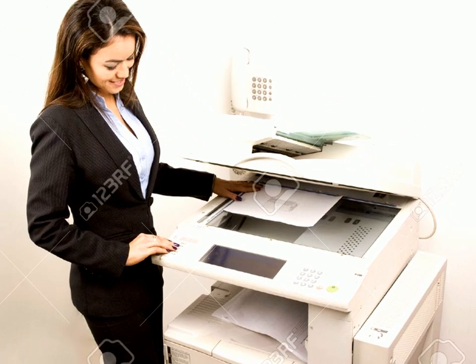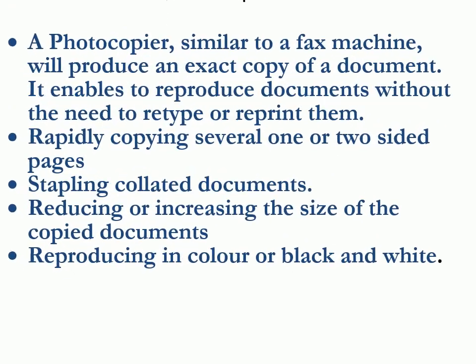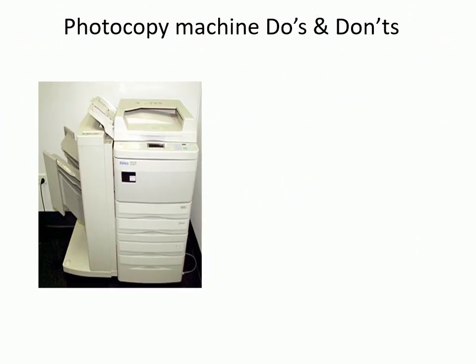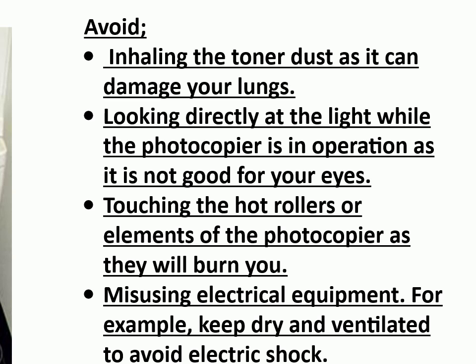Photocopy machine — a photocopier, similar to a fax machine, produces an exact copy of a document, enabling reproduction without the need to retype or reprint. Capabilities include: rapidly copying single or double-sided pages, stapling collated documents, reducing or increasing the size of copied documents, and reproducing in color or black and white. Photocopy machine do's and don'ts — avoid: inhaling toner dust as it can damage your lungs, looking directly at the light while operating as it is harmful to eyes, touching hot rollers or elements as they will burn you, and misusing electrical equipment — keep dry and ventilated to avoid electric shock.